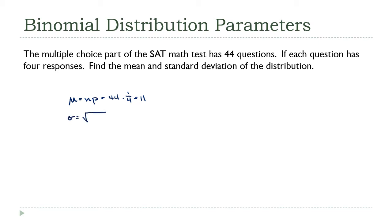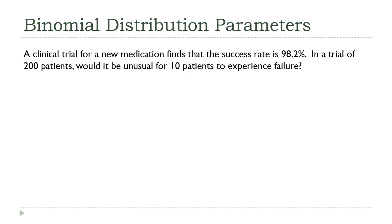Okay, so how about the standard deviation? Well, that's the square root of NPQ, so that's the square root of 44 times one-fourth times three-fourths, and my calculator tells me that this is 2.872.